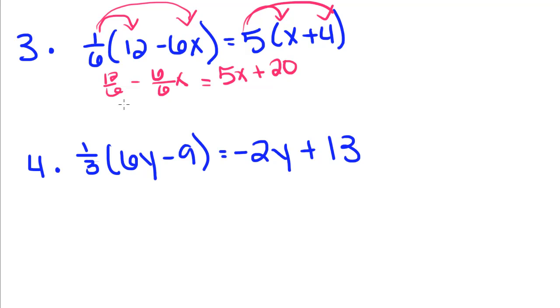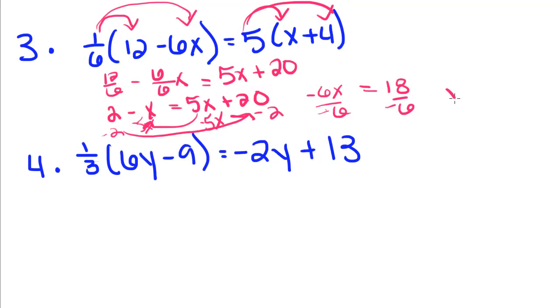So 12 divided by 6 is 2, minus x is equal to 5x plus 20. So I'm going to bring the x's over here, and the constants over here. I'm going to subtract 5x from both sides, and I get negative 6x is equal to, subtract 2 from both sides, is equal to 18. Divide by negative 6, and I get x is equal to negative 3.